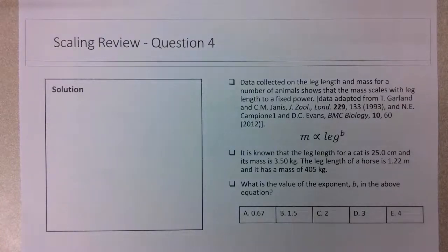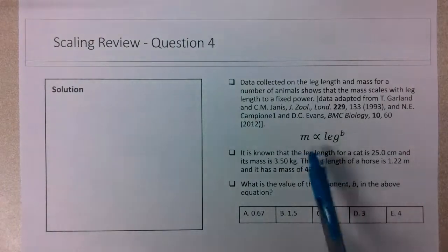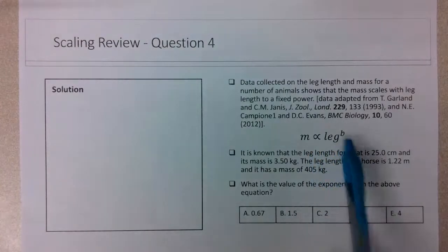The data quoted here states that the mass of a certain number of animals chosen for the study scales with their leg length to a fixed power. So the mass is proportional to the leg length to a fixed power.